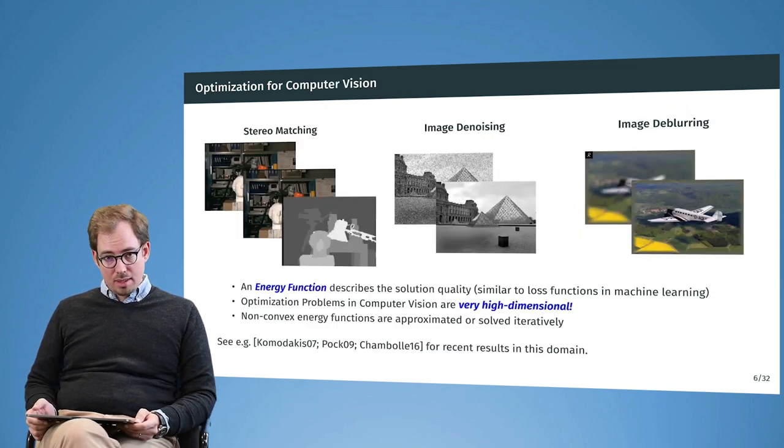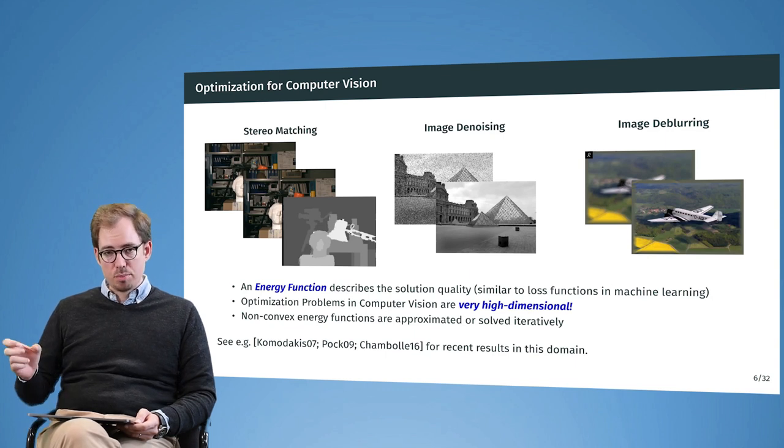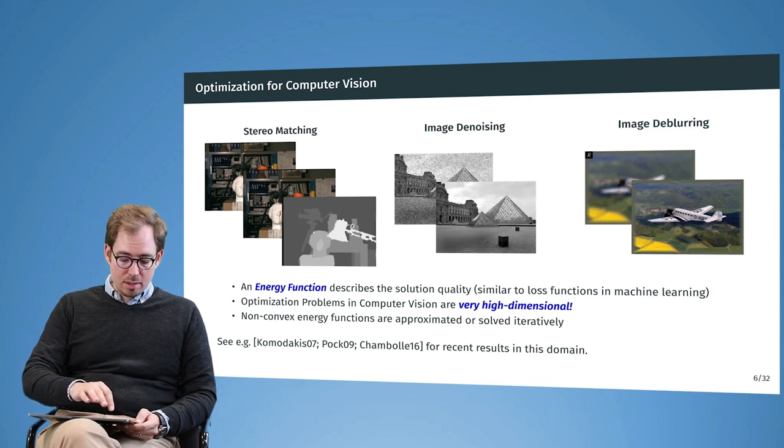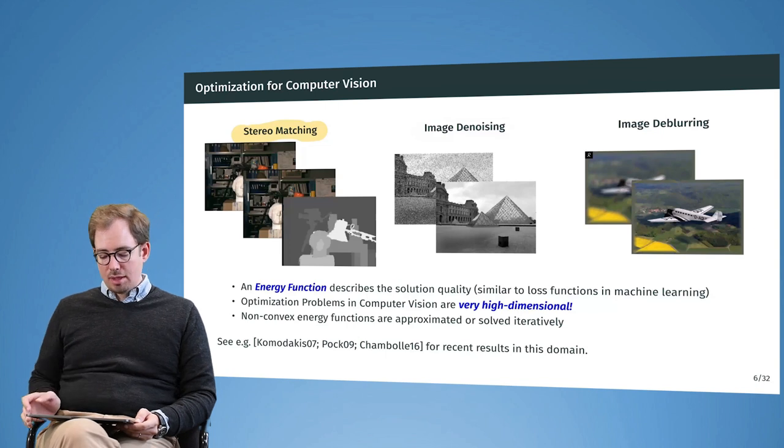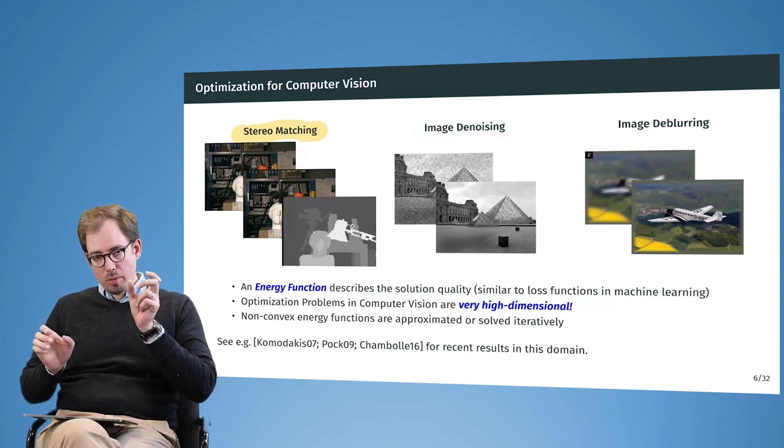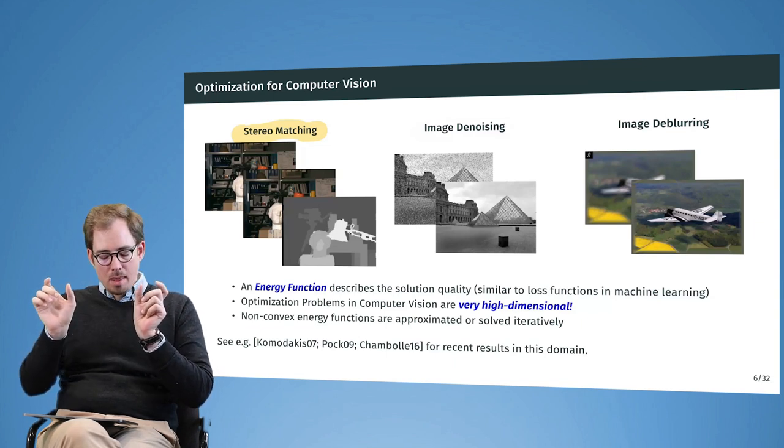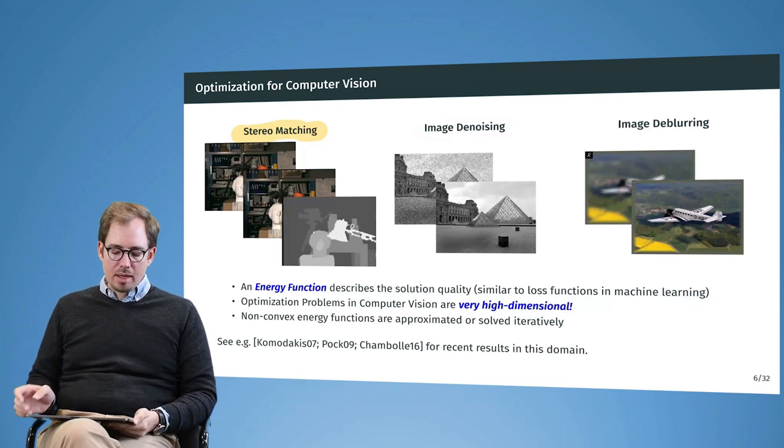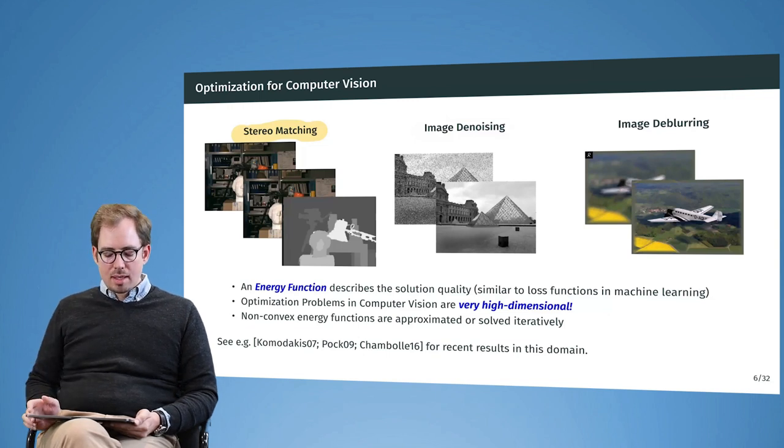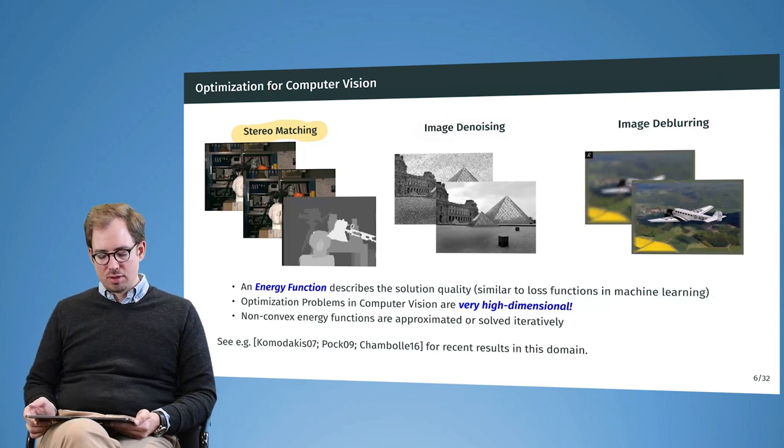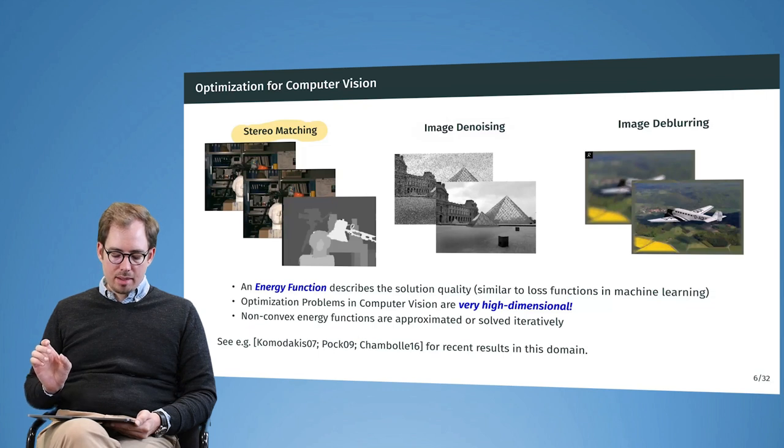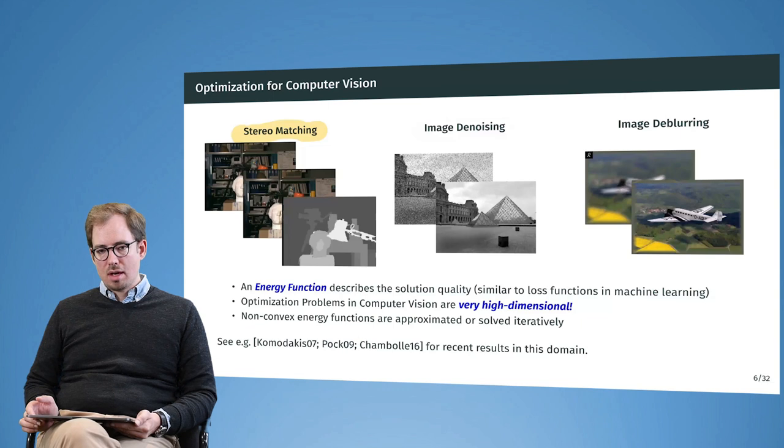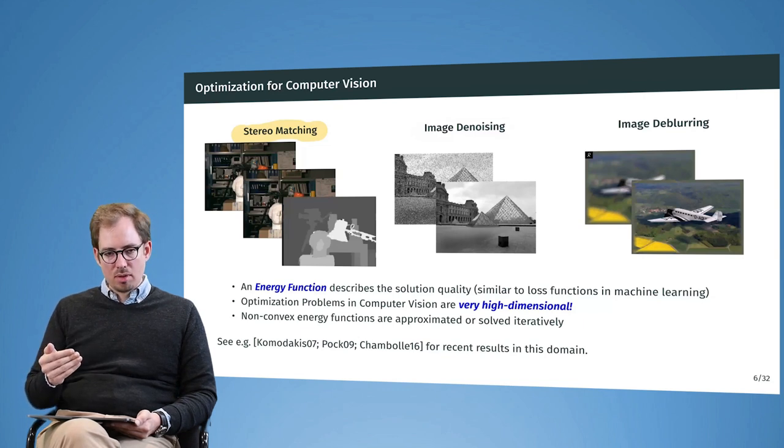Another domain that we will see in the course later on is computer vision. It might seem unintuitive, but many problems that are solved in computer vision are also optimization problems or can be expressed as optimization problems. The first of which I want to talk about is stereo matching. Stereo matching is the question when you take two pictures that are a couple of centimeters apart—like human eyes are a couple of centimeters apart—by the deviation of the pixels between the two images, can you figure out how far away the objects are on the images.